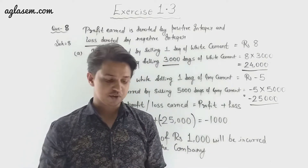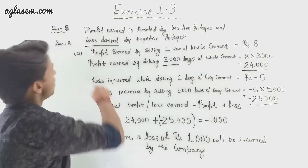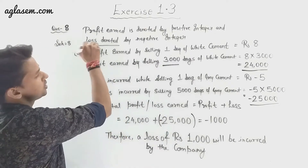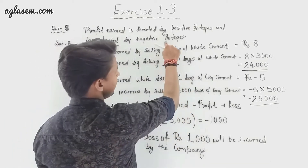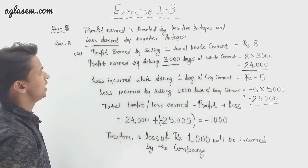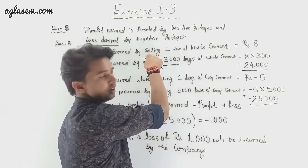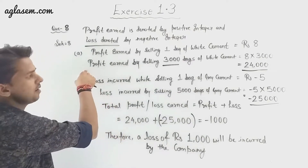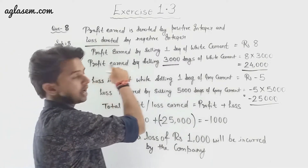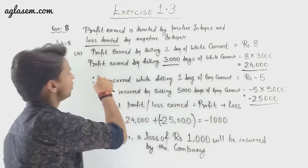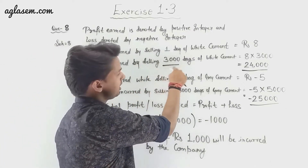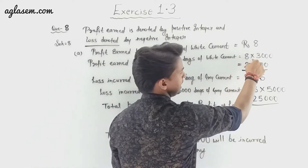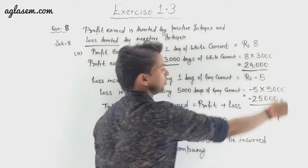Profit is denoted by a positive integer and loss by a negative integer. Profit earned by selling one bag of white cement is rupees 8. Profit earned by selling 3000 bags of white cement is 8 multiplied by 3000, which equals 24,000 rupees.